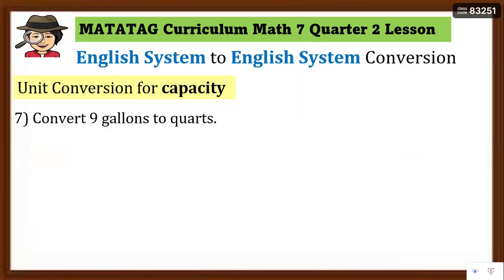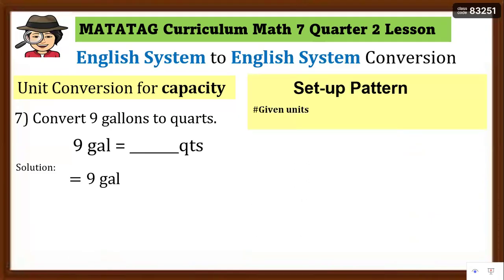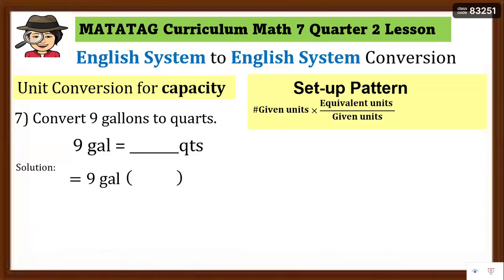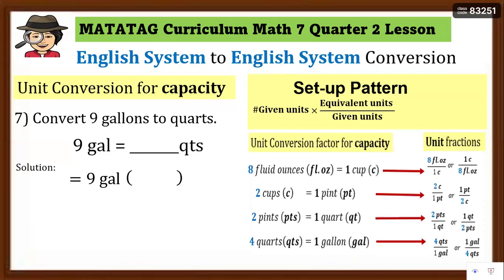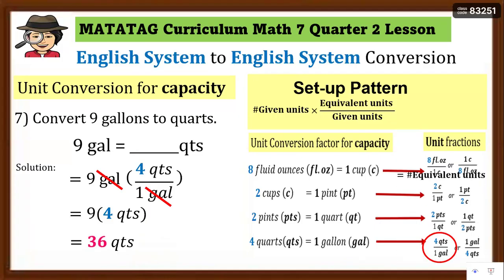Number 7: Convert 9 gallons to quarts. The given unit is gallons going to quarts, so gallon must be in the denominator and quarts in the numerator — that is 4 quarts over 1 gallon. Cancel the gallons, then multiply: 4 quarts times 9 equals 36 quarts. So there are 36 quarts in 9 gallons.